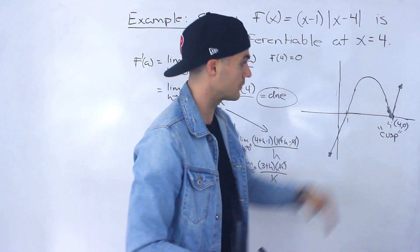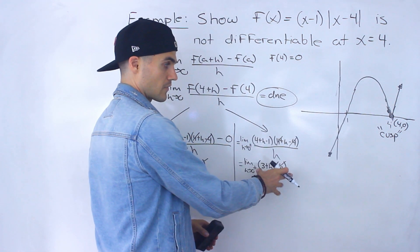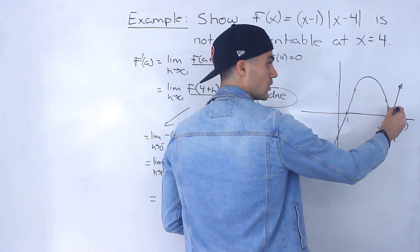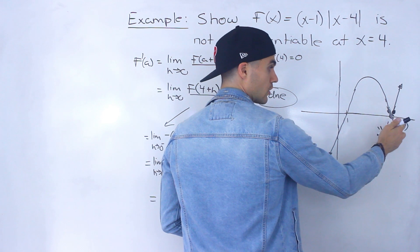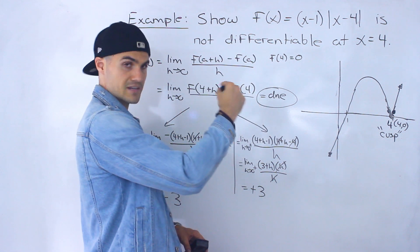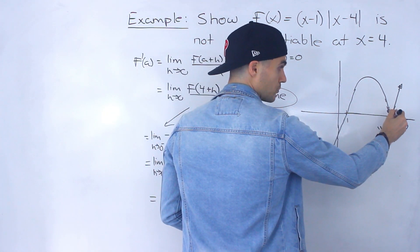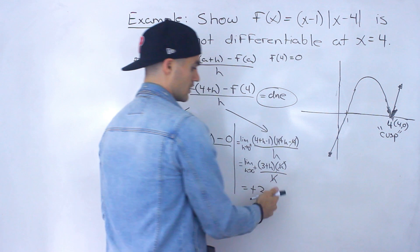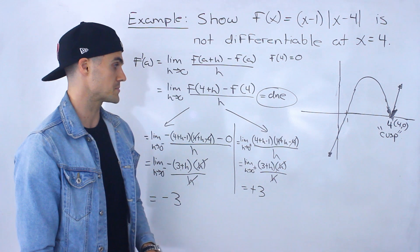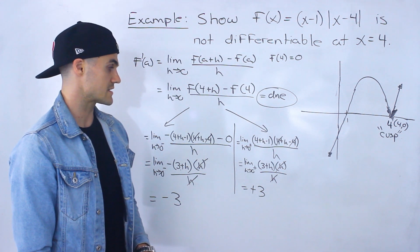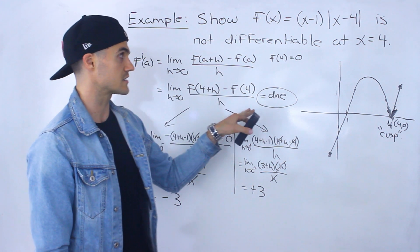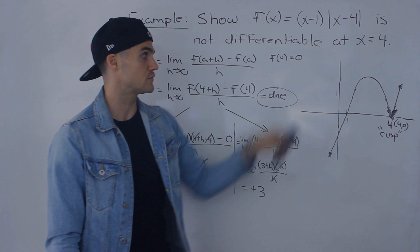Approaching from the left, we're on the downward-opening parabola, so the slope approaches negative 3. Approaching from the right, we're on the upward-opening parabola, so the slope approaches positive 3. Because the left-hand and right-hand limits are different values — negative 3 and positive 3 — the overall limit as h approaches 0 does not exist, confirming that the function is not differentiable at x equals 4.